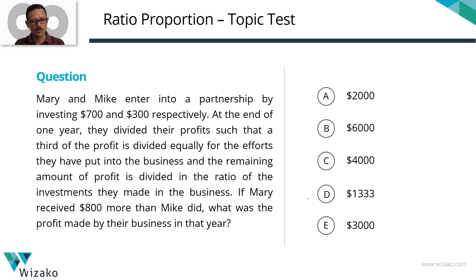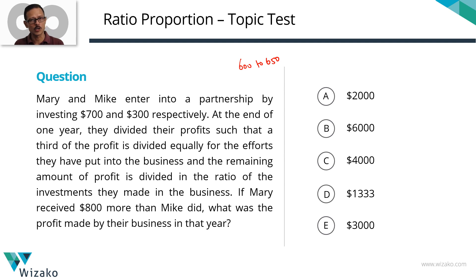This is a medium difficulty GMAT problem solving question. I'll classify this as a 600 to 650 level question from the topic ratio and proportion, focusing on the concept of partnership. It's a word problem.